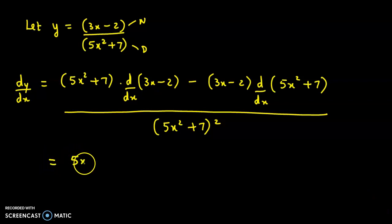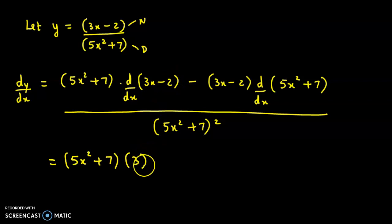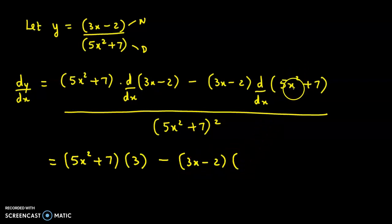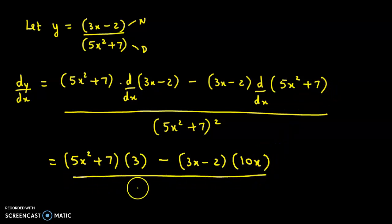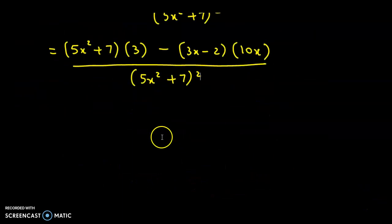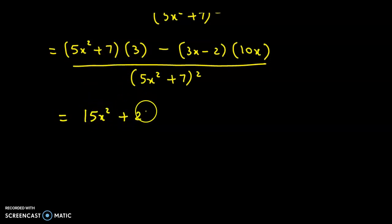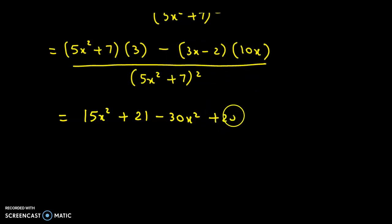We get (5x squared plus 7) into 3 — since the derivative of 3x is 3 and derivative of 2 is 0 — minus (3x minus 2) into the derivative of 5x squared which is 10x, plus the derivative of 7 which is 0, divided by denominator as it is (5x squared plus 7) the whole square. Now opening the brackets: 3 into 5x squared is 15x squared, plus 3 into 7 is 21, then 10x into 3x is 30x squared, and 10x into minus 2 is minus 20x.